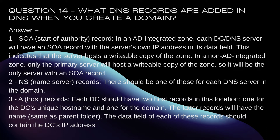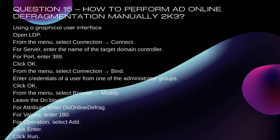3. A (Host) records: Each DC should have two host records in this location — one for the DC's unique host name and one for the domain. The latter records will have the name 'same as parent folder.' The data field of each of these records should contain the DC's IP address.